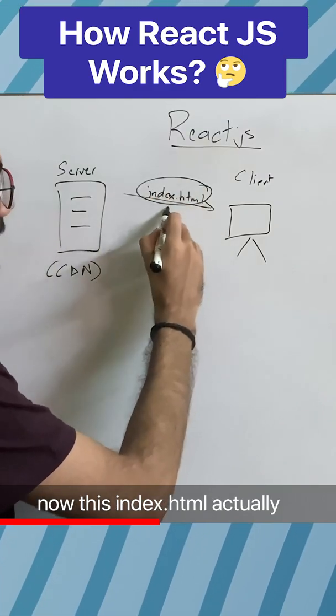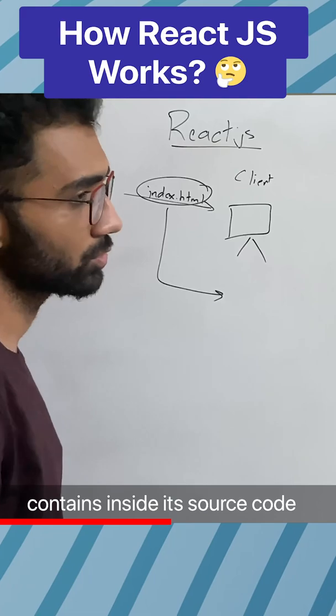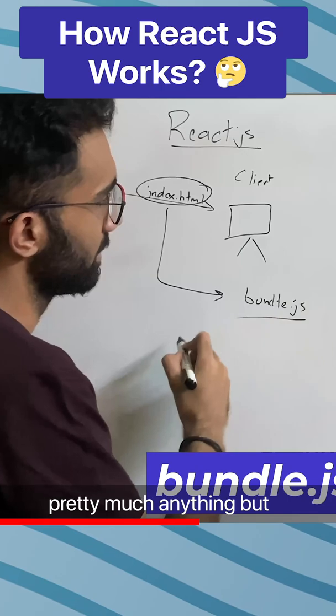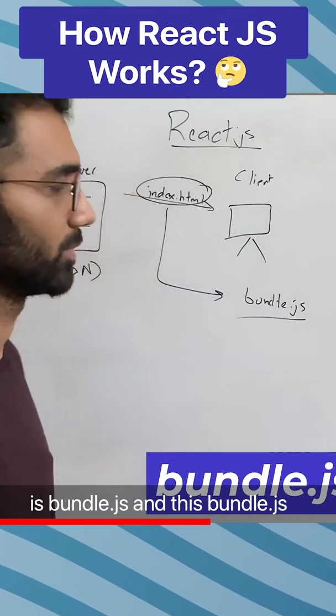Now this index.html actually contains inside its source code something known as bundle.js. This file could be named pretty much anything, but the default name for React is bundle.js.